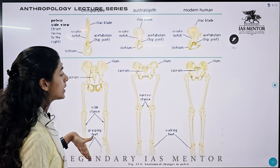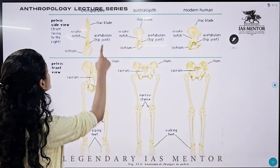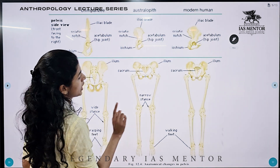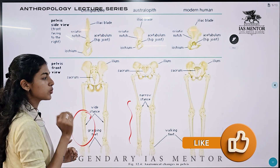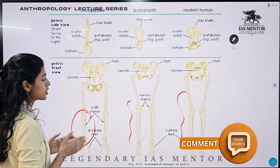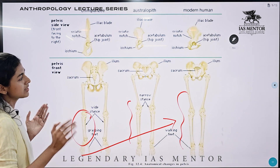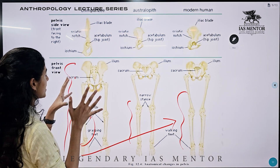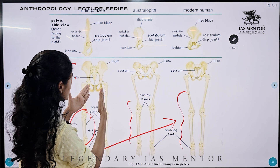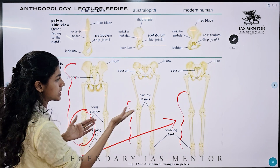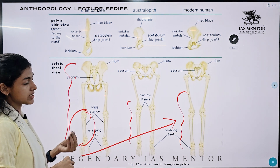Next are the lower limbs. In chimpanzees, the lower limbs are small; in Australopithecines they become larger; and in modern humans they are much larger. This is an evolutionary trend — the lower limbs increase in length. The complete image also shows pelvic differences along with lower limbs: more parallel and short in chimpanzees, broad and long in humans, supporting bipedalism and upright posture.